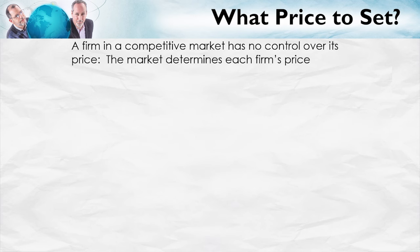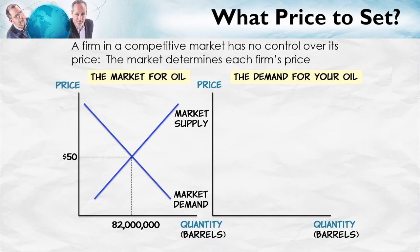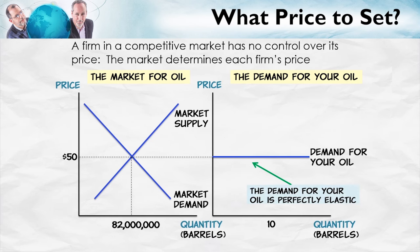Suppose you own one of those stripper oil wells. What price are you going to set? Well, fortunately your problem is going to be really easy, because a firm in a competitive market has no control over its price — the market determines each firm's price. Let's take a look at the market for oil, and suppose that world demand and supply are such that quantity demanded equals quantity supplied at a price of $52, at which point 82 million barrels of oil a day are bought and sold. The demand for your oil — the oil produced by your stripper oil well — is going to be perfectly elastic at the market price.